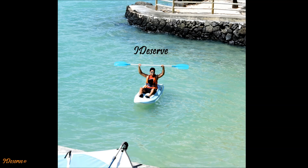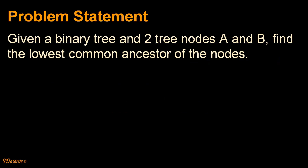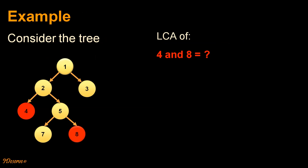Hello friends, I am Saurav. Let's have a look at another interesting problem today, which is how to find the least common ancestor of two nodes in a binary tree. The problem statement is: given a binary tree and two tree nodes A and B, we have to find the lowest common ancestor of the nodes.